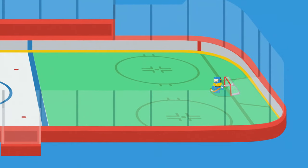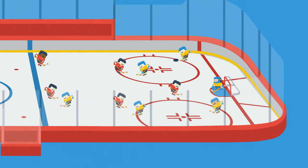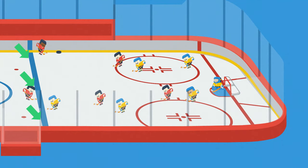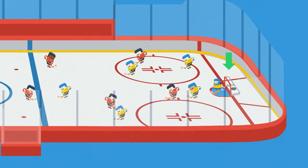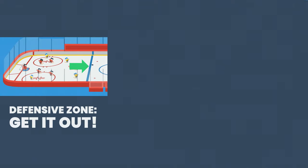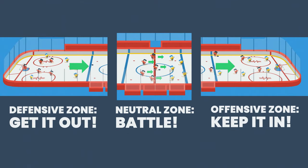When you're in the offensive zone, you want to do two things: one, keep the puck in the offensive zone, and two, of course, score. These are important concepts to know as they'll better help you understand offside and icing.